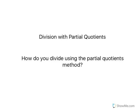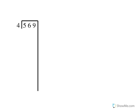How do you divide using the partial quotients method? Here we have 569 divided by 4. The first thing I want to do is try to subtract groups of 4.